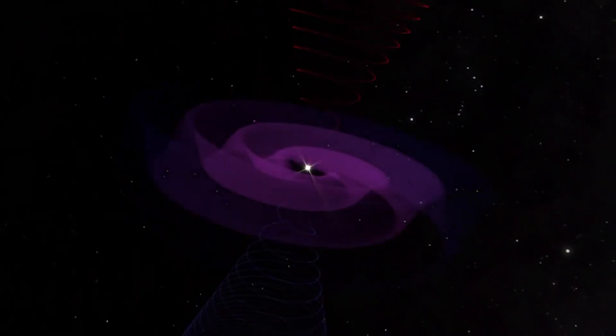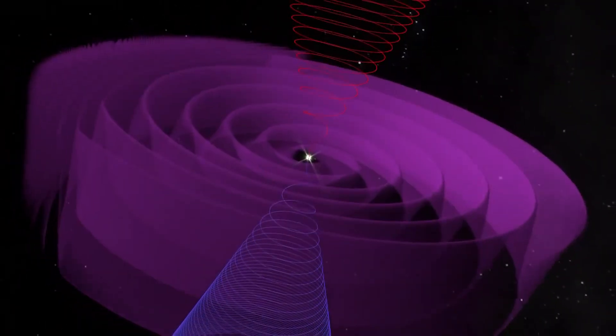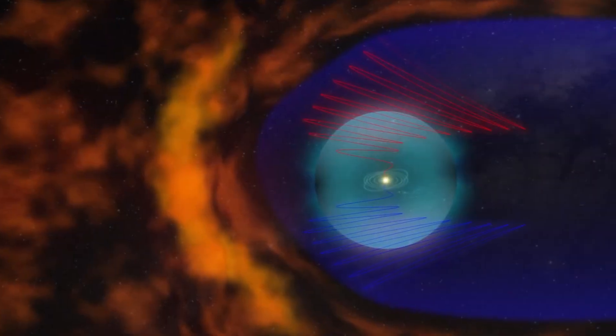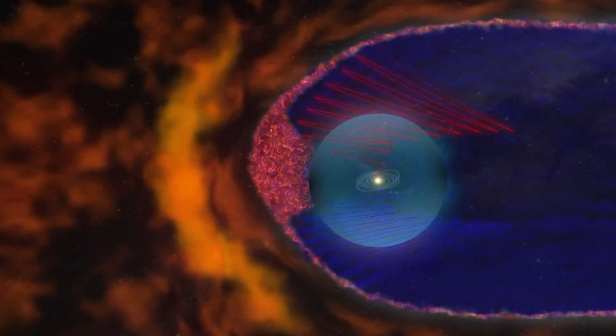When the solar wind pushes up against the interstellar wind, it causes a three-dimensional sine wave form in the solar wind, which in turn affects the formation of the heliosphere and heliopause.